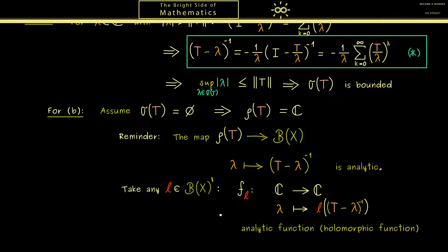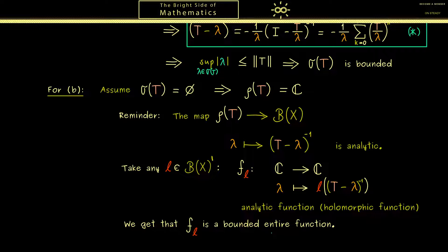Indeed what we get is that f_l is a bounded entire function. Here the term entire is not so complicated. It simply means analytic together with the domain C. So the entire complex plane is the domain. And that the function is bounded we can easily show now.